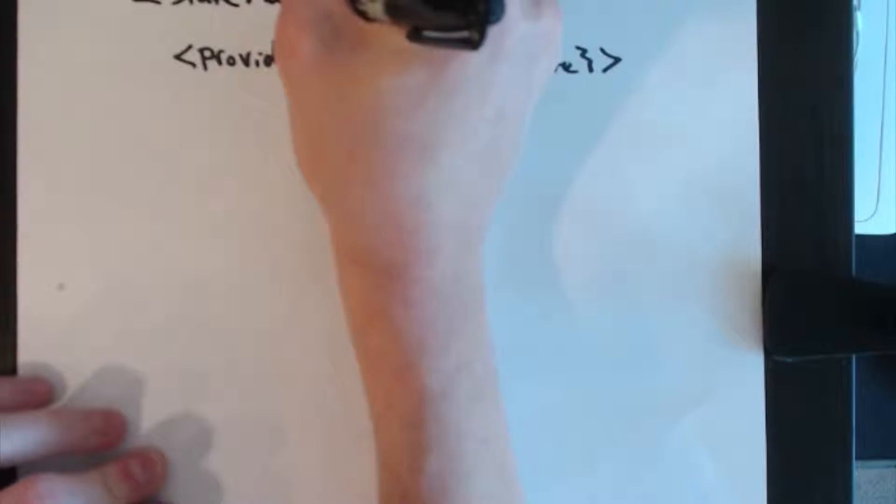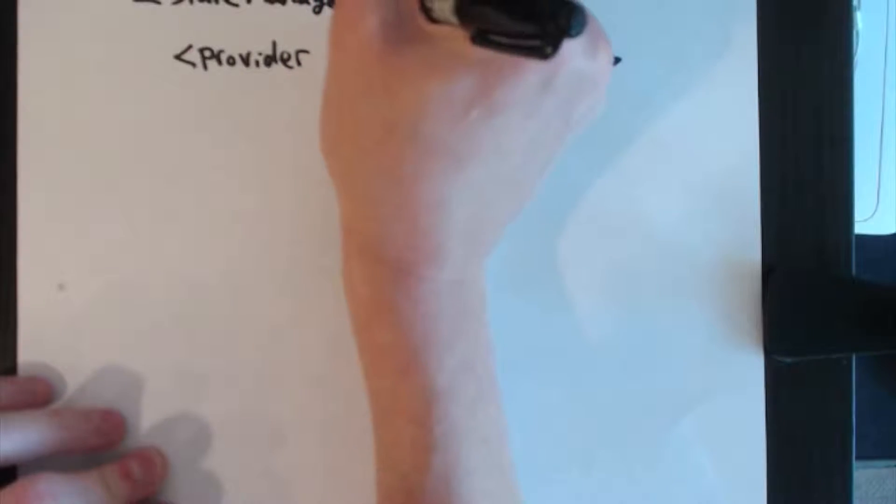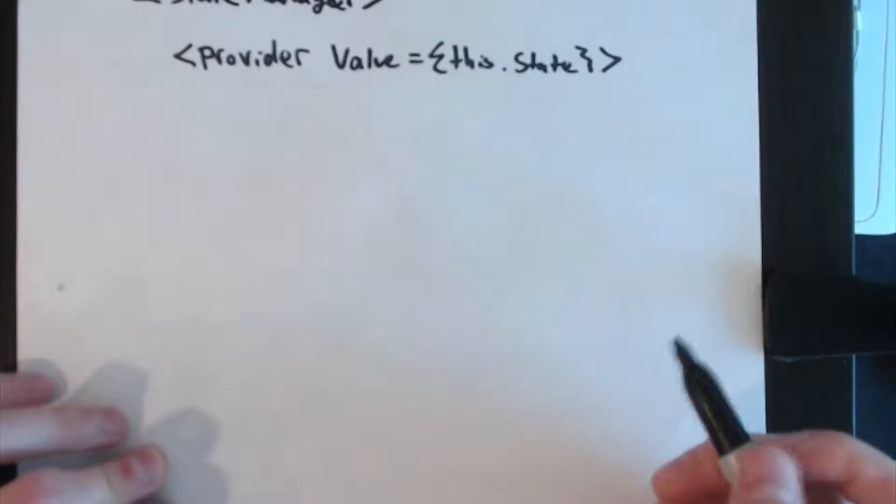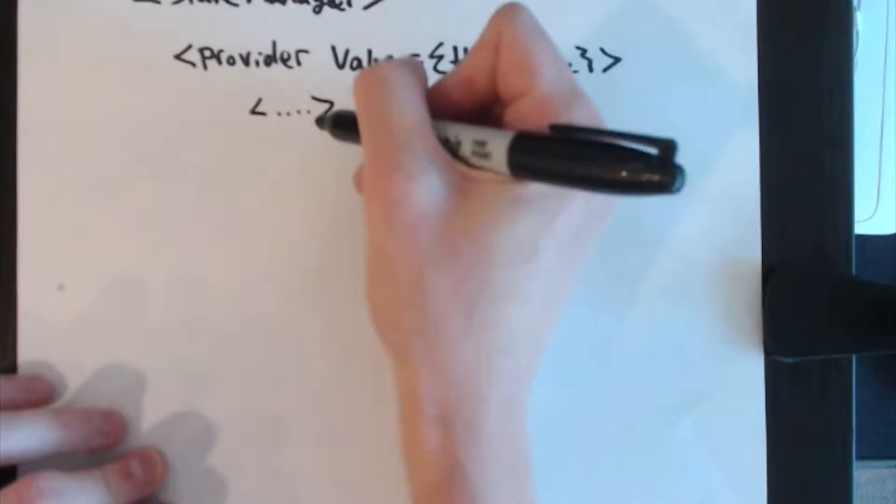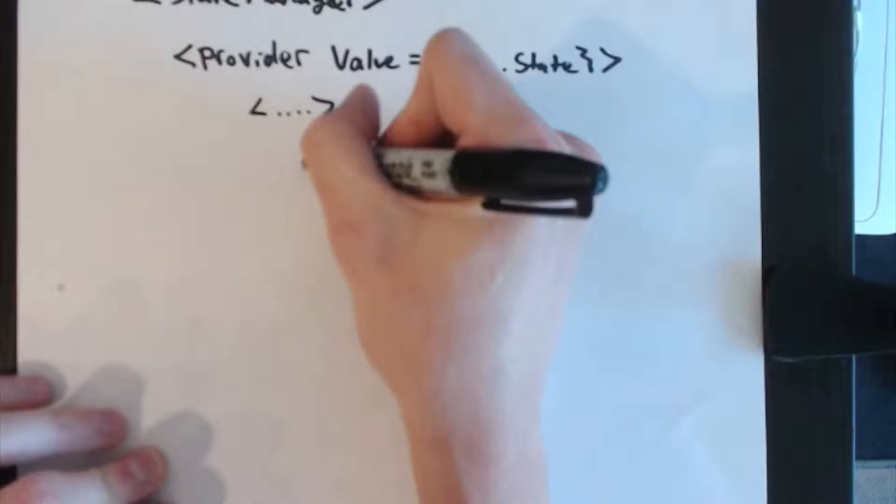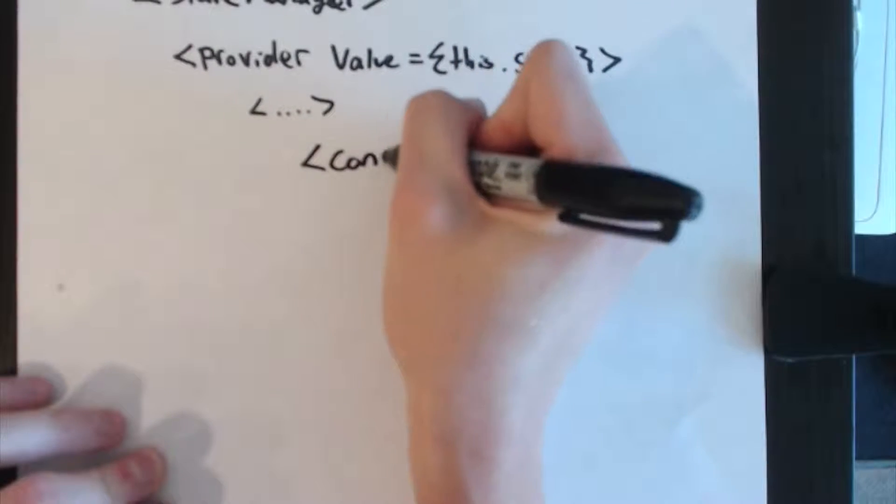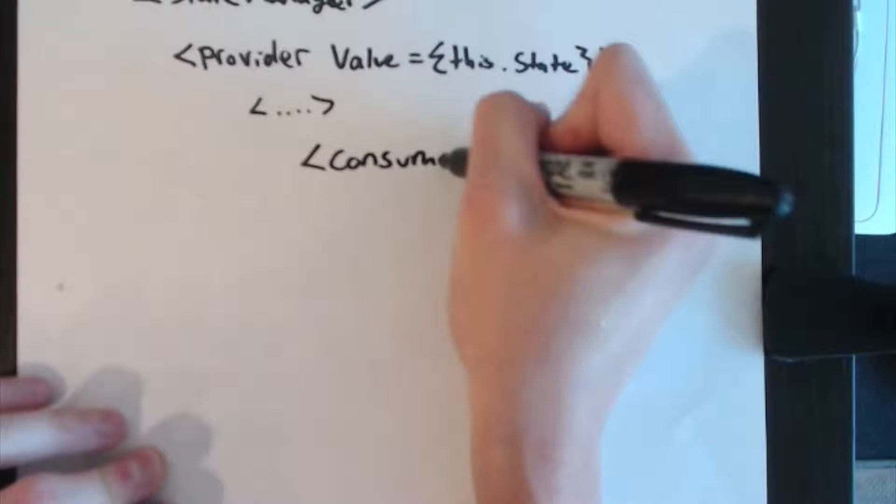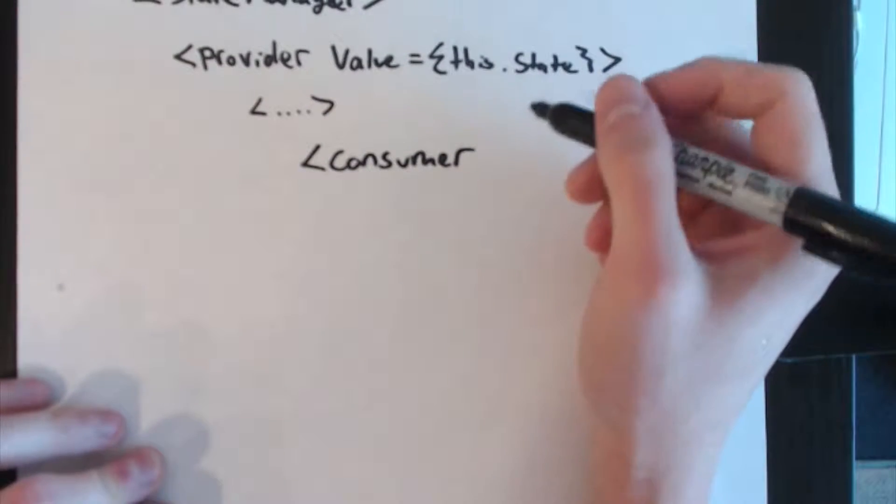So up here we have a state manager component. I know you can't quite see that, but we have a state manager component and it renders a provider and passes its local state as the provider value. Then let's just say we have a huge React tree here where I drew dot dot dot, and somewhere further down the tree you render the context consumer component.